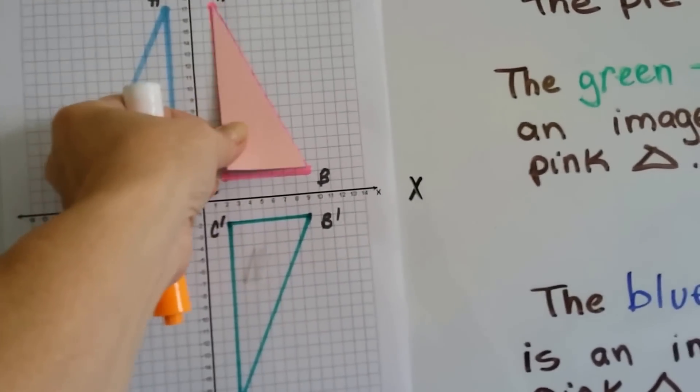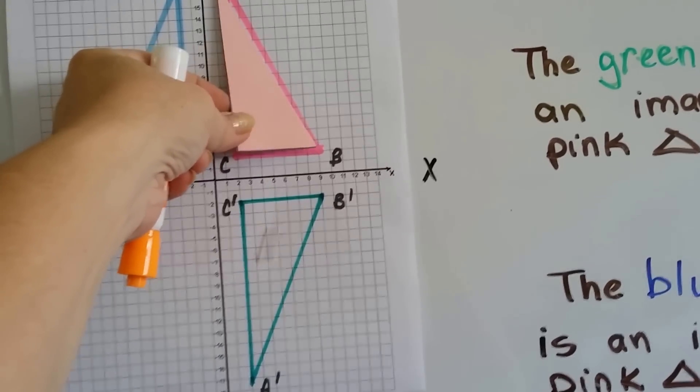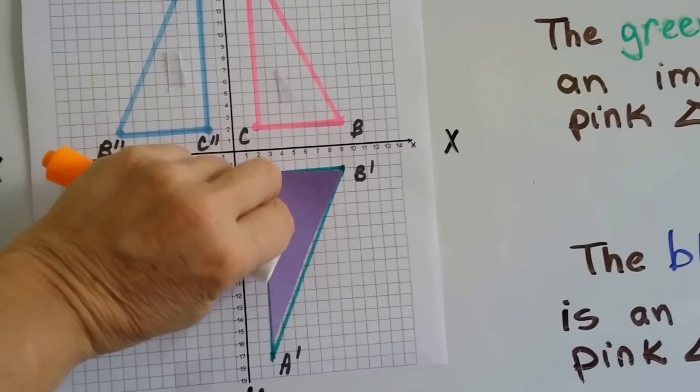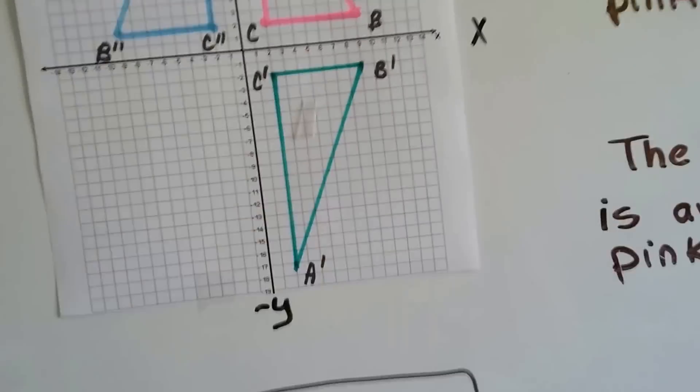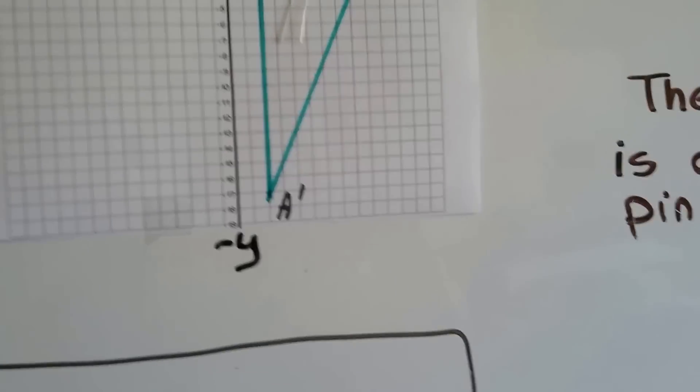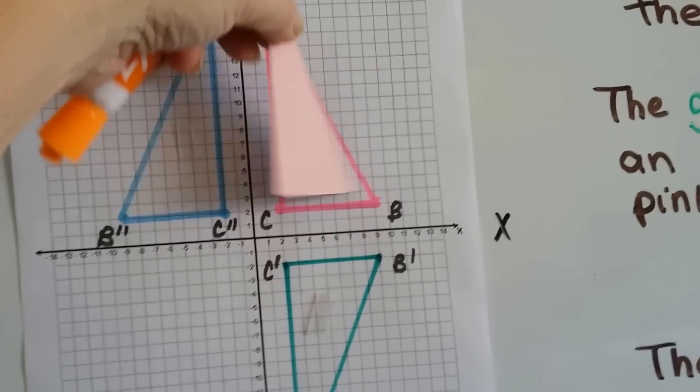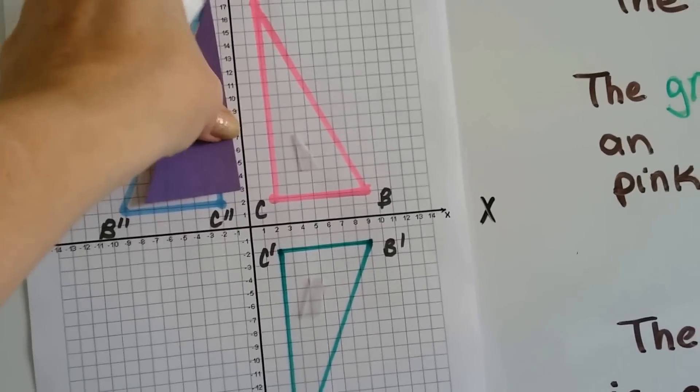We've got the pink triangle and the green triangle is the reflection of it. See that? We can just go like this and it'll flip and be the exact same shape. We can even do it with the blue one. We can take the pink triangle and we can flip it and it'll lay perfectly here.